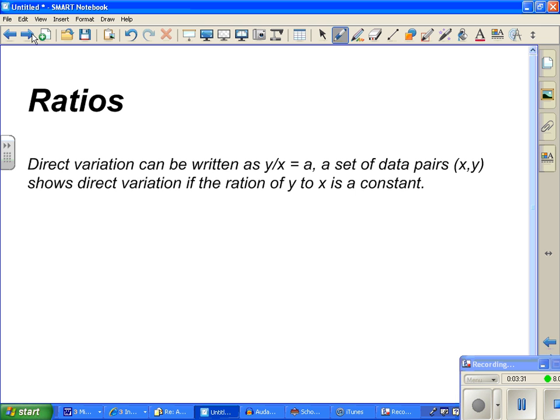Ratios. Direct variation can be written as y divided by x equals a. A set of data points (x, y) shows direct variation if the ratio of y to x is a constant. Well, let's take a look at this. If I take a look at the general form of y equals ax and I divide by x, it's all this for a. Don't I get y over x equals a? Doesn't that end up happening right there?